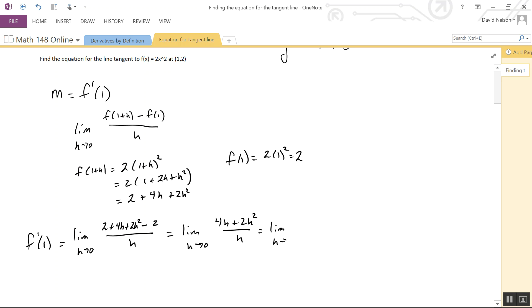As h goes to 0, we're looking at 4 + 2(0), which gives us 4. So the slope of our tangent line is 4.